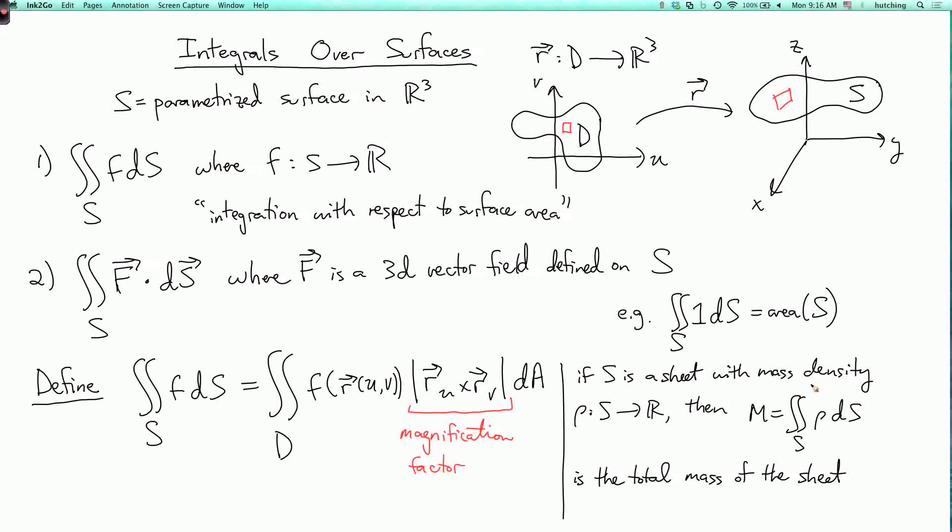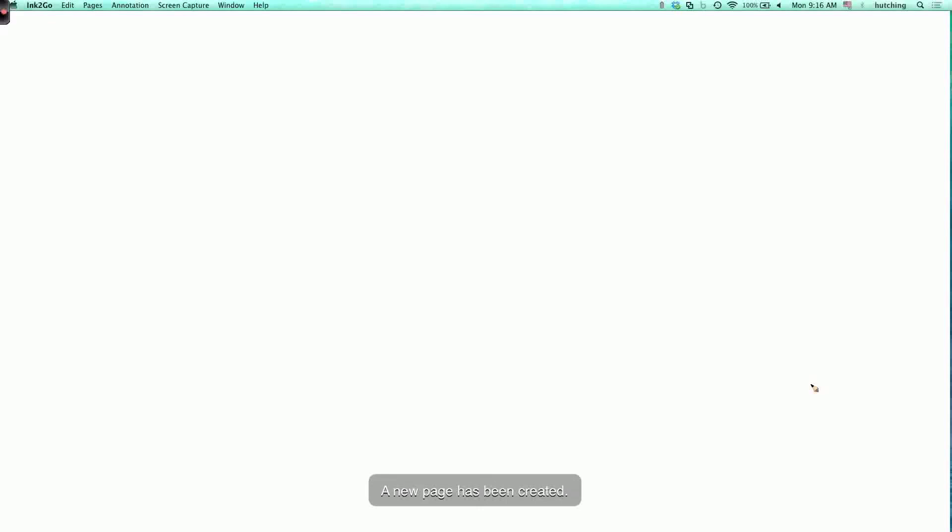So let's do an example of integration with respect to surface area. Let's calculate the double integral over S of yz ds, where S is given by the following parameterization: x equals uv, y equals u plus v, z equals u minus v, and u squared plus v squared is less than or equal to 1. So the domain parametrizing the surface is the unit disk, where u squared plus v squared is less than or equal to 1, and these are the equations that describe the surface.